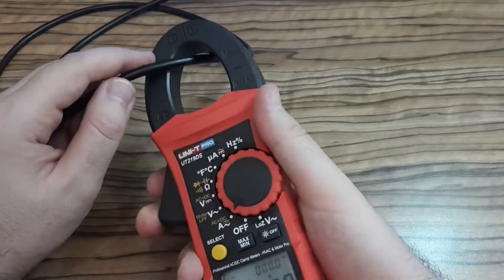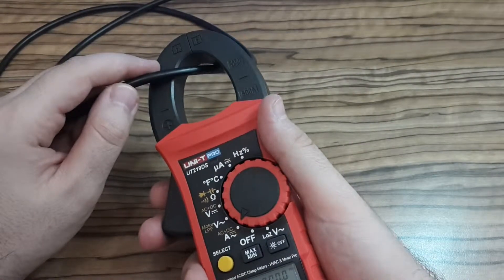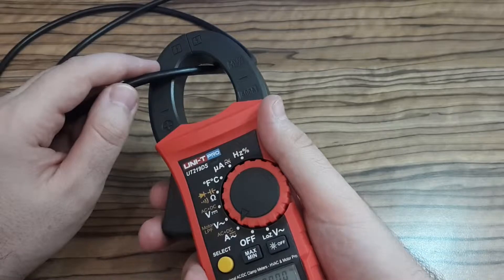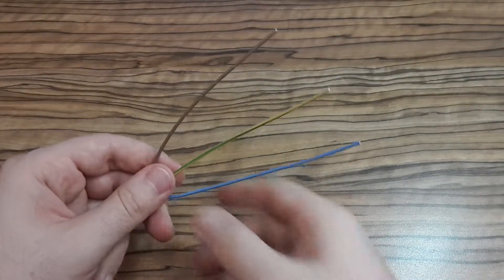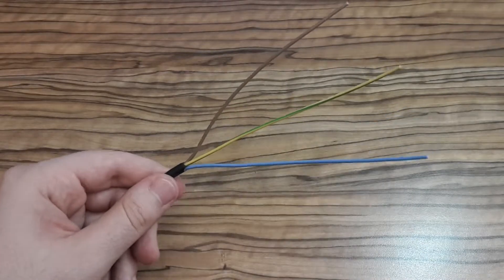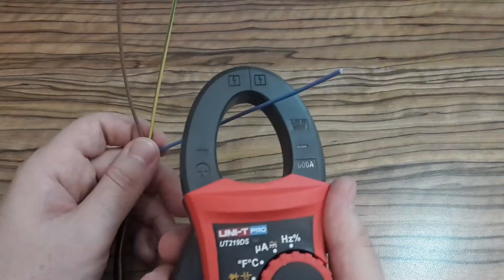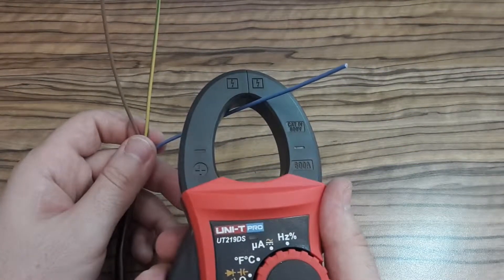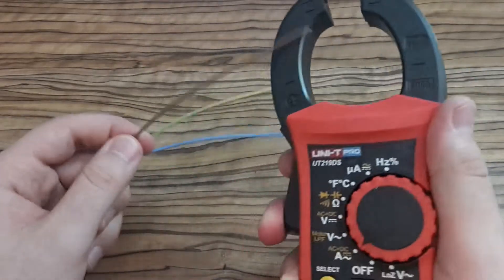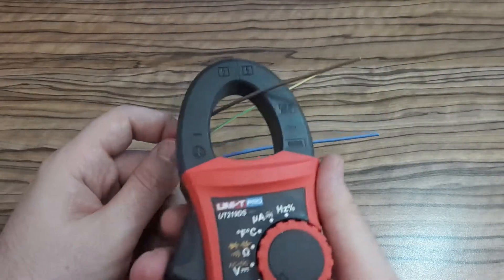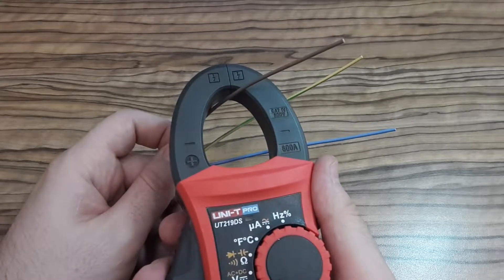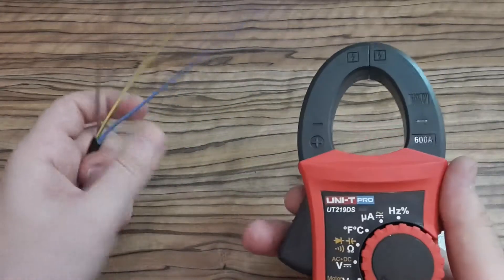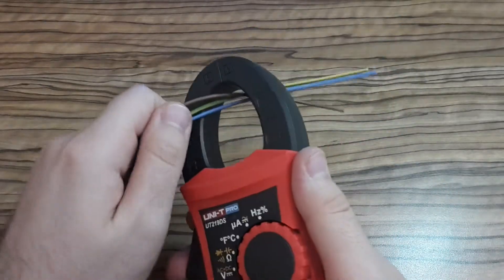People usually start measuring current with a clamp meter like this and that's completely incorrect. You have to realize there are several wires inside cables and if you want to measure current with a clamp meter correctly, you have to measure it on a single line, otherwise it won't work.